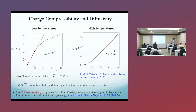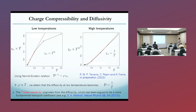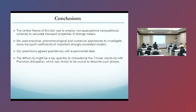If the resistivity is T-linear, then the diffusivity at low temperatures would vary like one over T. So we can see that the T-linear resistivity actually originates from the diffusivity, and this has been argued to be a more fundamental transport coefficient. It would be very interesting to measure this kind of quantity in actual materials. With that I come to my conclusions.